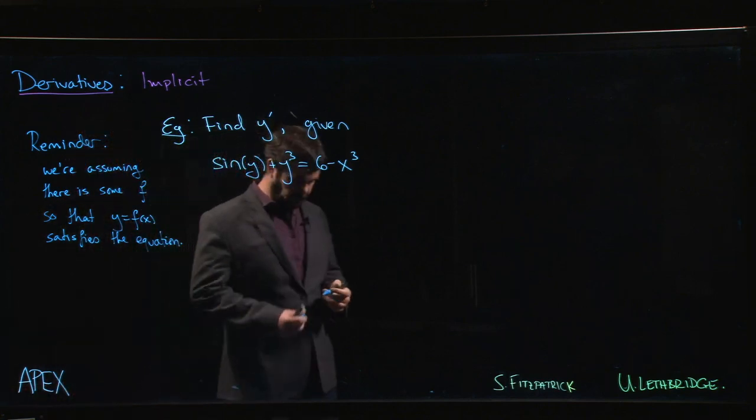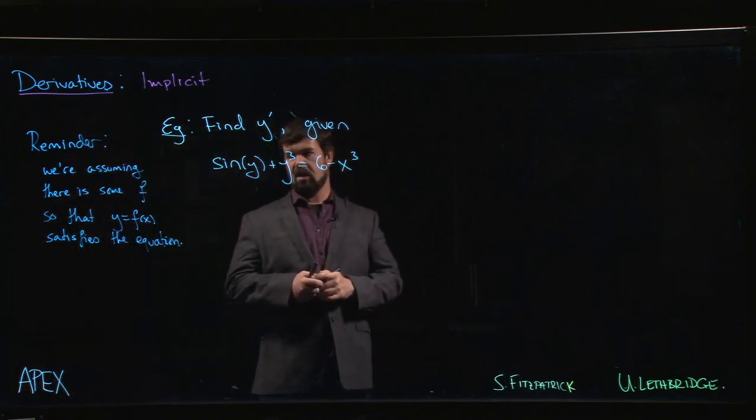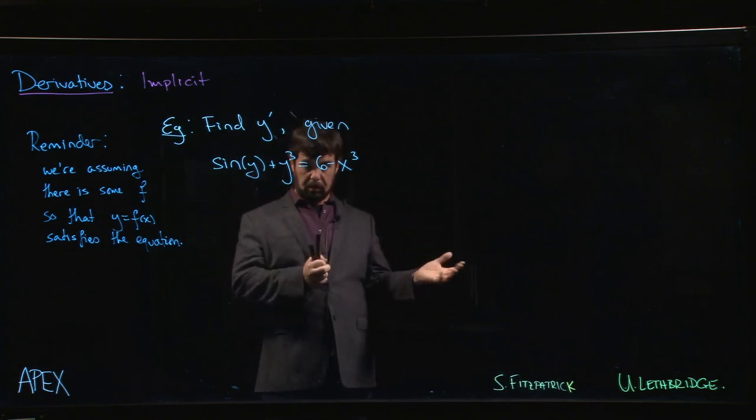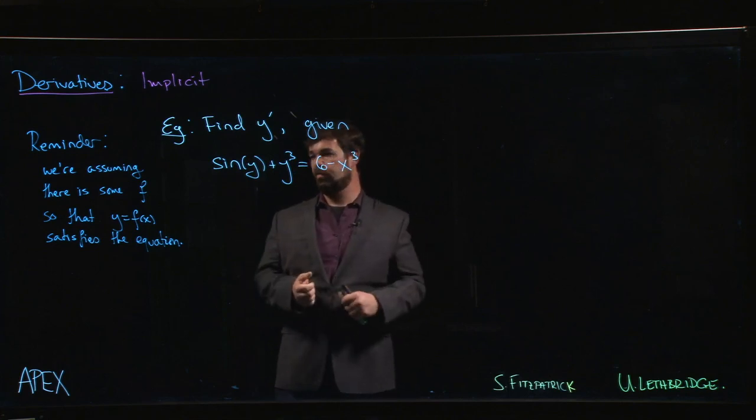This is the primary assumption you're making when you're doing implicit differentiation. That sine of f of x plus f of x cubed is equal to 6 minus x cubed. So there's an equality of two functions of x.